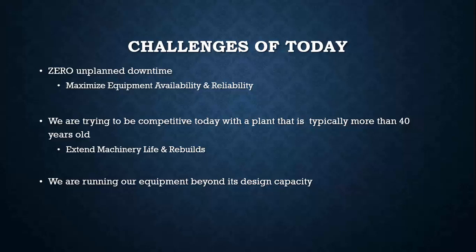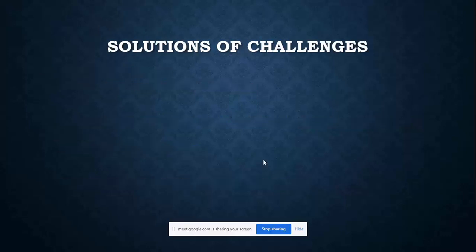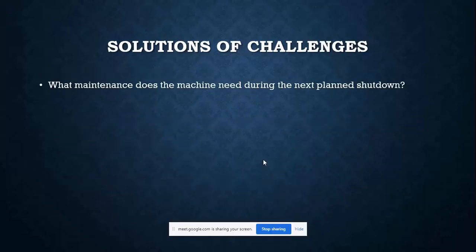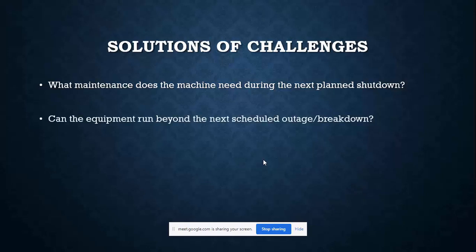So what are the solutions to those challenges? The first is maintenance — what maintenance does the machine need during the next planned shutdown? What things need to be looked after? The second is: can the equipment run beyond the next scheduled breakdown or outage? If you plan repair work in 15 days, can it be operated safely beyond that schedule?